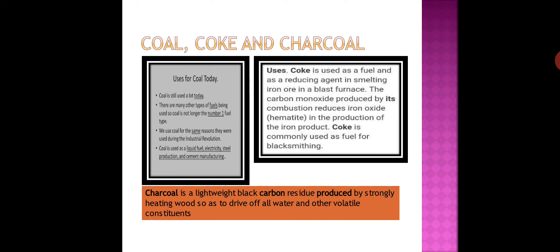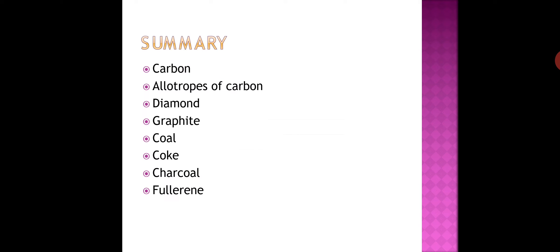Charcoal made from animals is made from bones, horns, etc. On the other hand, charcoal made from plants is formed by combustion of wood in an insufficient supply of air.